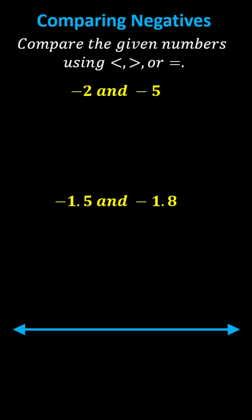Compare the given numbers using less than, greater than, or equals. First, we have negative 2 and negative 5. Let's compare these by plotting the values on the number line.